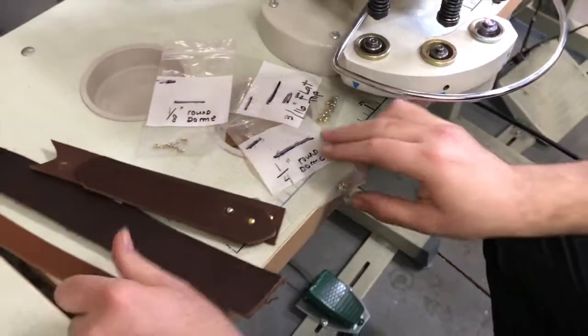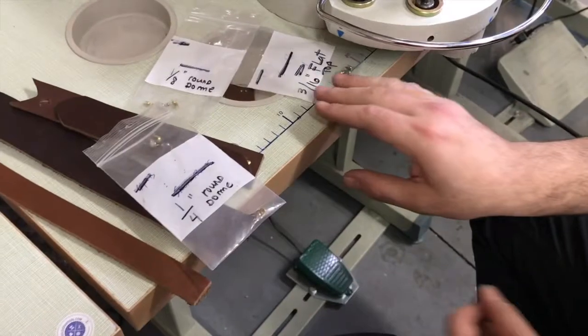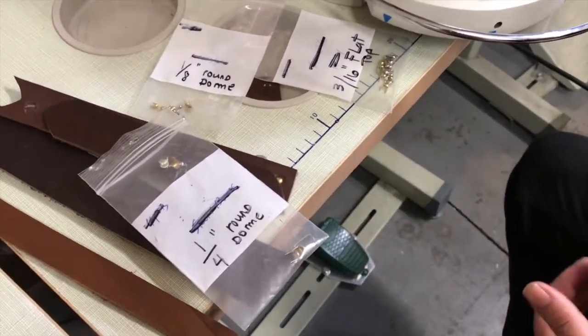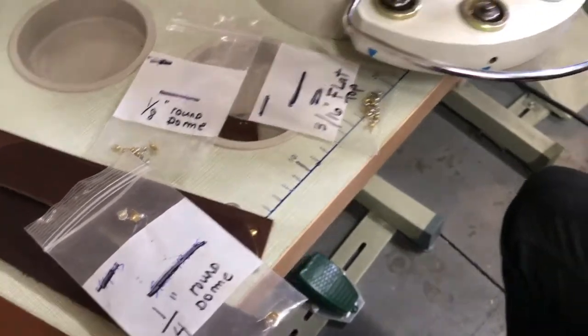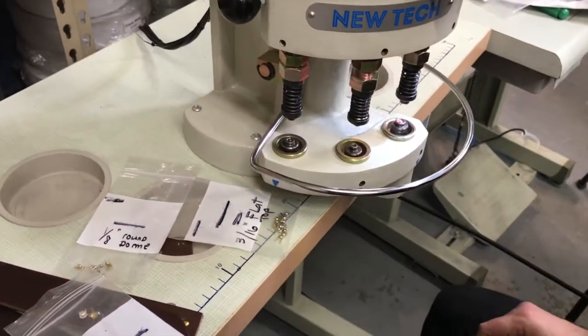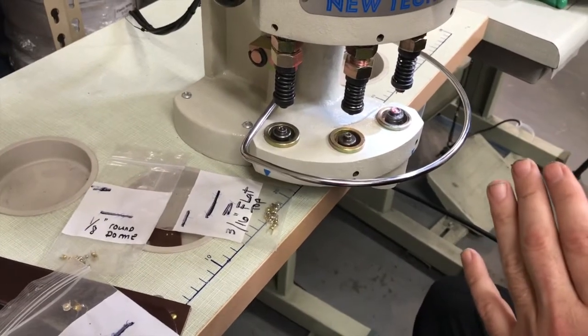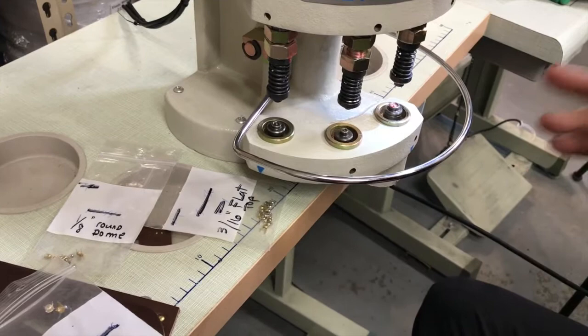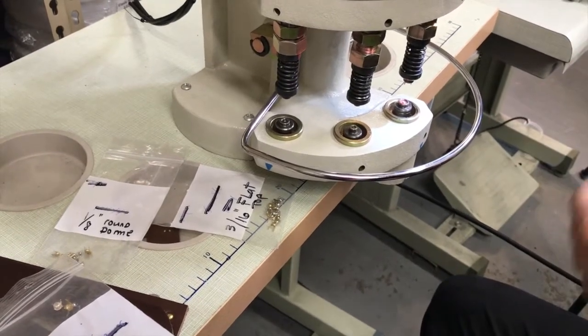She's using this for 1/8 inch, 3/16 inch, and quarter inch dome rivets. We made her a die and I thought it would be great to show you guys what we could do with this machine. These machines that we make here are not limited only to the products that we sell when it comes to grommets, snaps, and rivets.